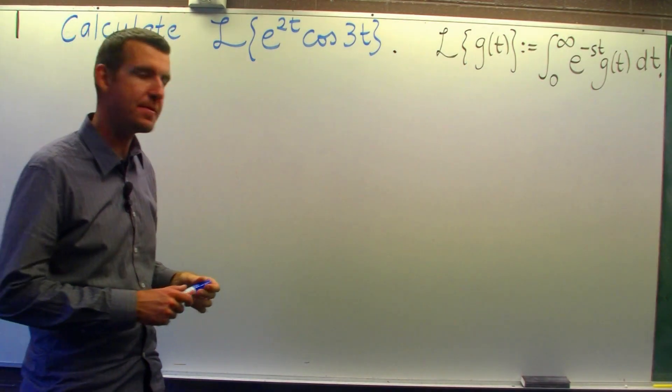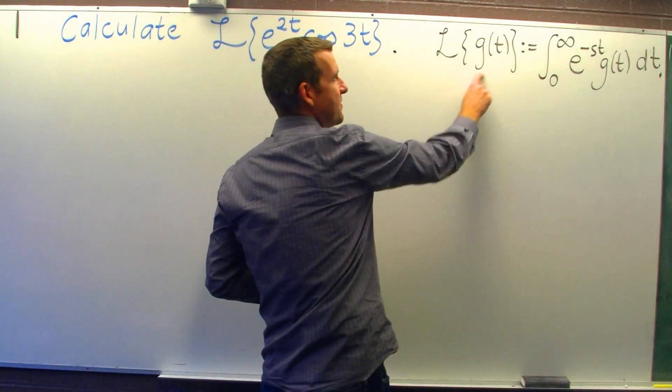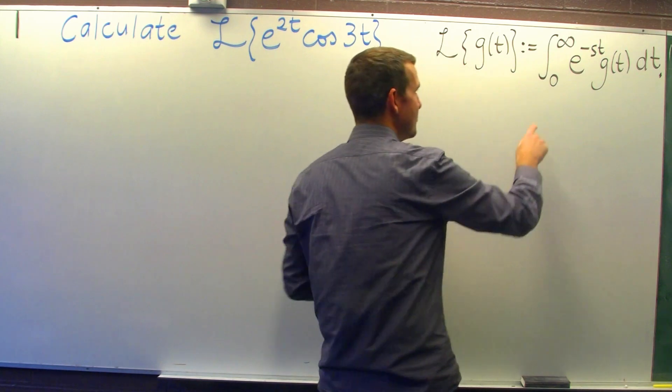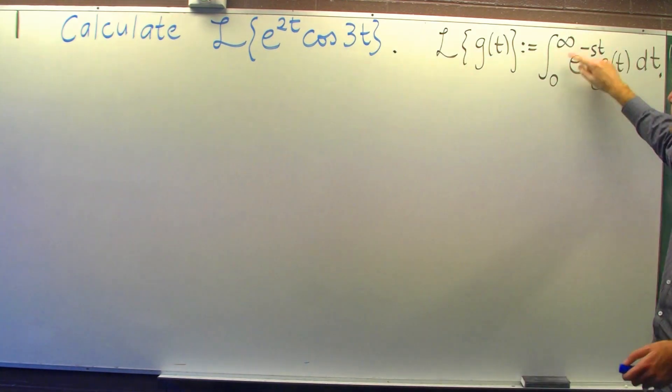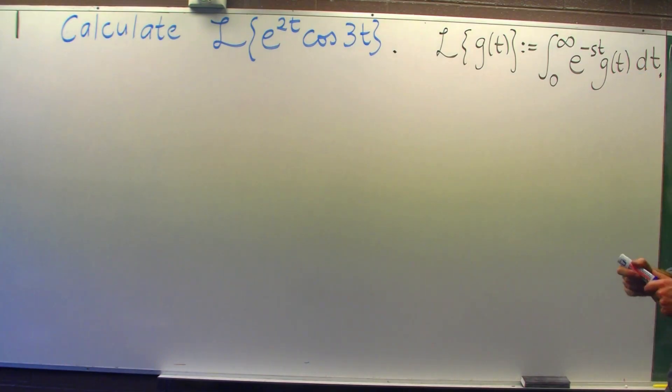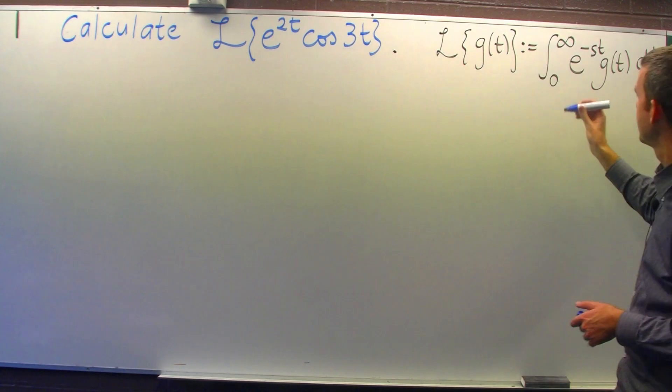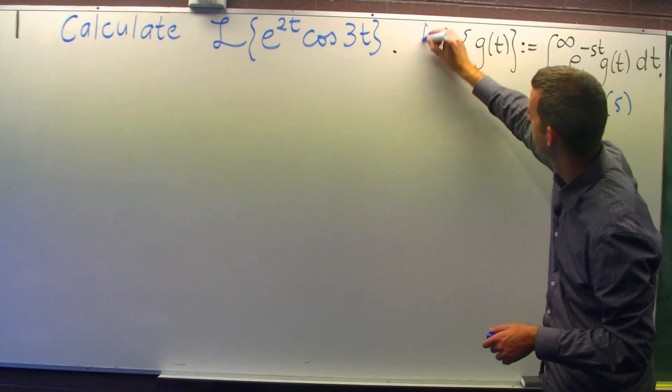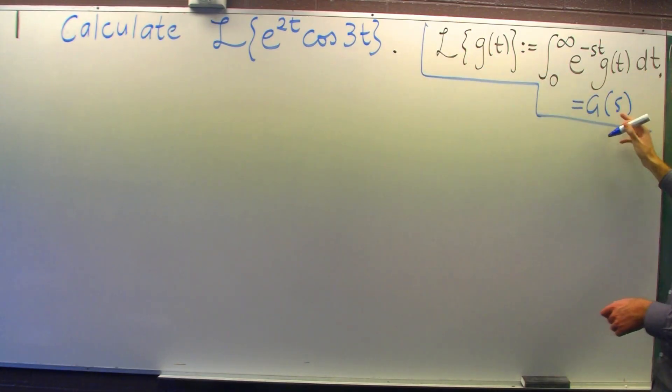Just remember that the Laplace transform of a function of t is just an integral transform, and you can see here I've got an exponential times the function g, and we're integrating from 0 to infinity with respect to dt. Now here t is known as the dummy variable, and so the whole thing here is just going to be a function of s.